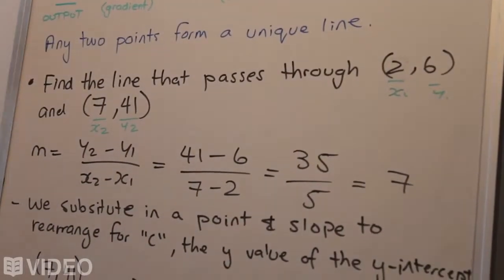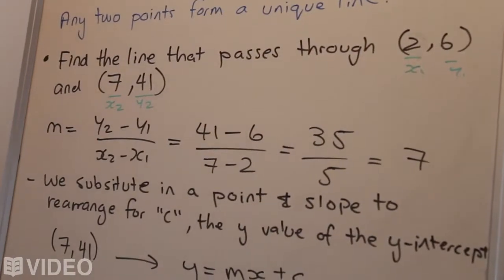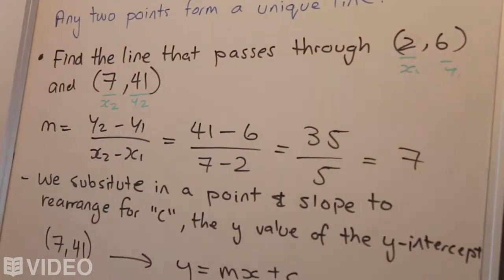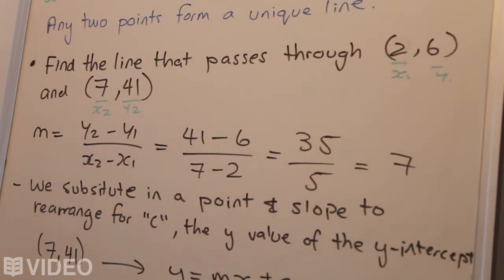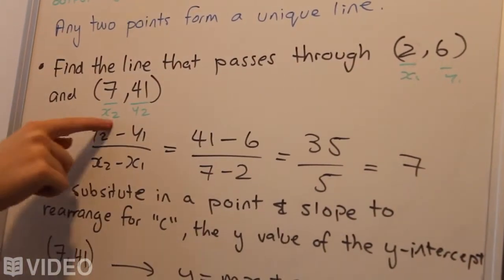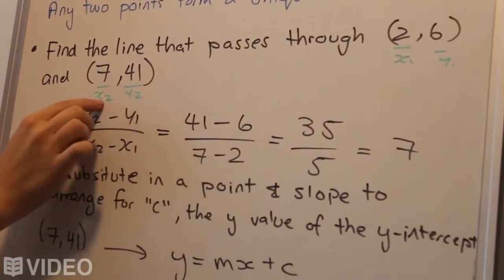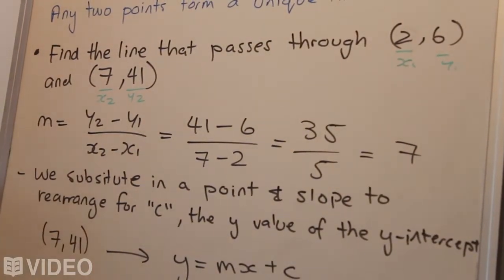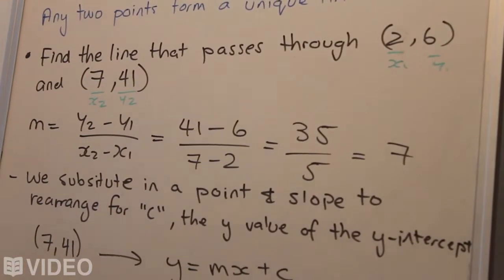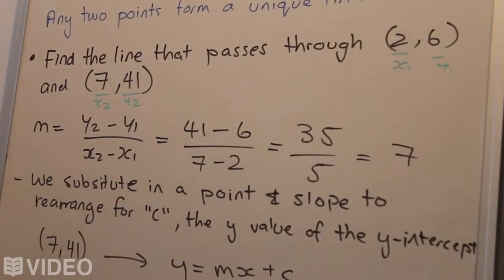We're going to find the line that passes through (2, 6) and (7, 41). We identify our coordinate points, and remember what I said in the slope video last episode: I generally say that the one with the larger numbers is coordinate 2, so x2 and y2 make up that coordinate. Then x1 and y1 is the one that's smaller. That just helps with the algebra to keep things simple so you don't make those little plus or minus mistakes.